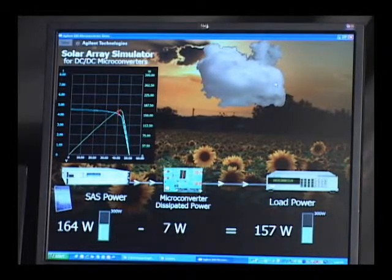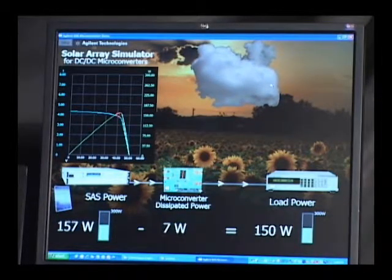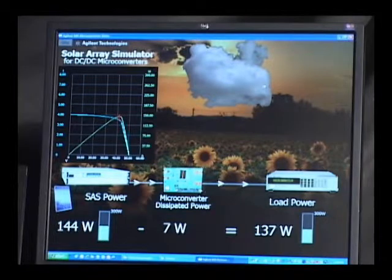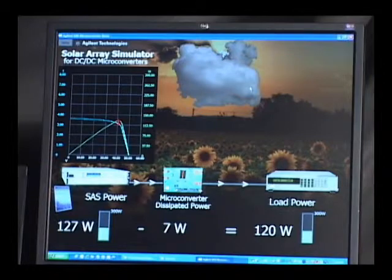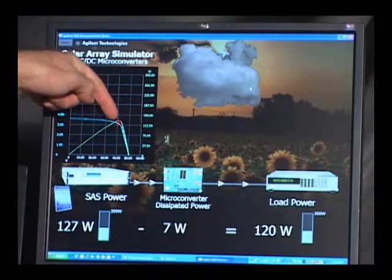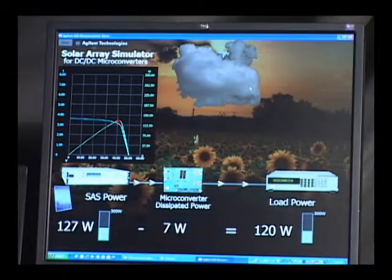And as a result we see that the red crosshairs are continuing to stay at the peak of that power curve, right at that maximum power point right there, no matter what the sunlight is.